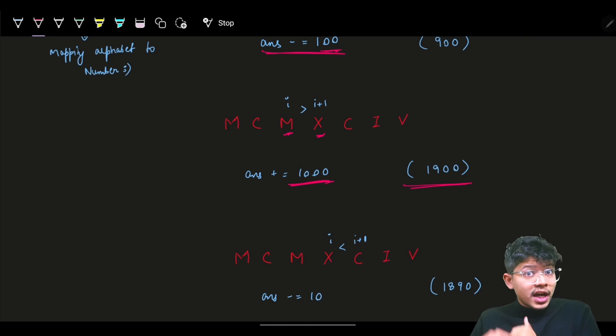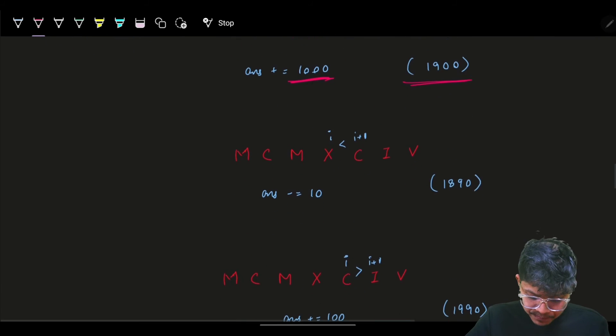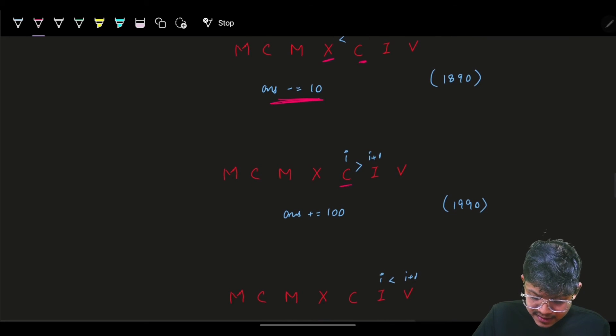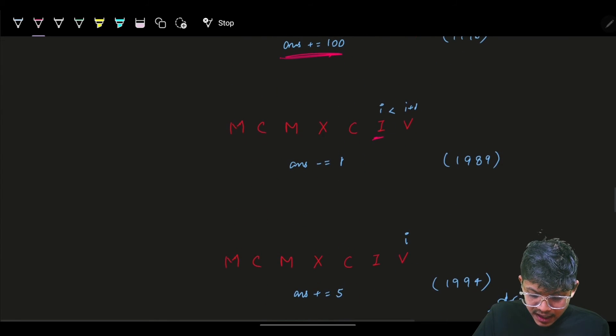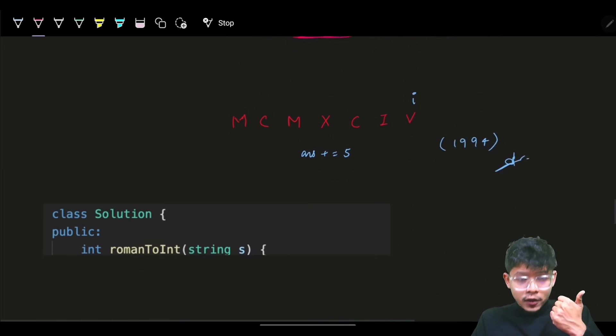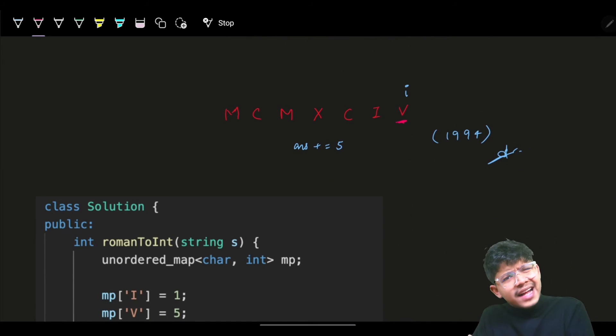X is less than C, so subtract the value of X. C is more than I, so add the value of C. I is less than V, so subtract the value of I. V is the last element, so simply add that. That's how you get it solved.